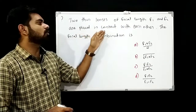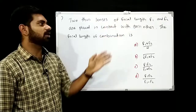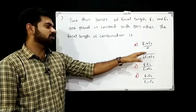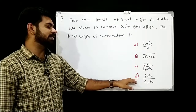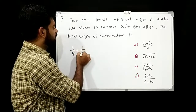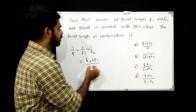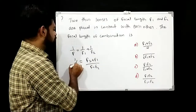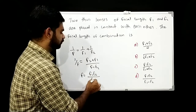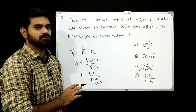Two thin lenses of focal length f1 and f2 are placed in contact with each other. The effective focal length of the combination is: option A: (f1+f2)/2, option B: √(f1·f2), option C: f1·f2/(f1+f2), option D: f1·f2/(f1−f2). Using 1/f = 1/f1 + 1/f2, the answer is option C: f1·f2/(f1+f2).